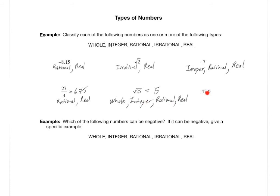47.0 is also a whole number because it's really just 47 — one of the counting numbers. So 47 is also an integer, rational, and real, for the same reason that square root of 25 was whole, integer, rational, and real. You should be able to classify numbers based on their type.